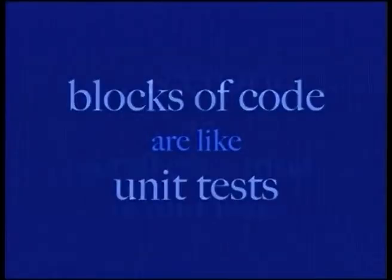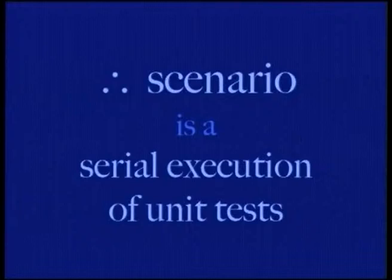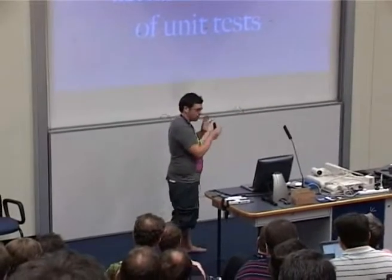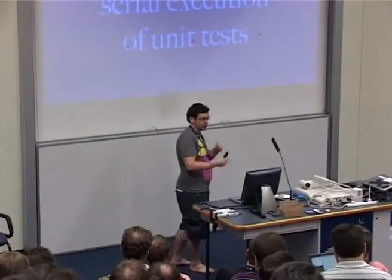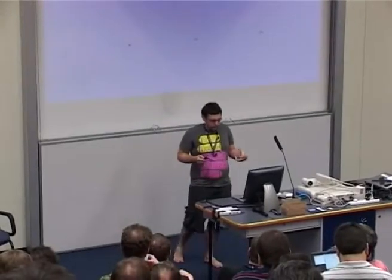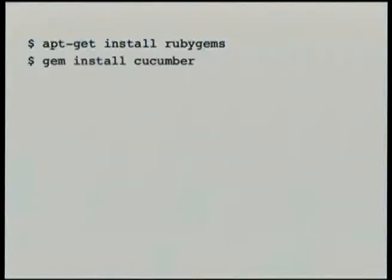The blocks of code are like unit tests. Therefore a scenario is a serial execution of those unit tests — that's essentially what an integration test is. You're interacting with different bits of the system at one point at a time and stringing the results together to check: if I do A, then B, then C, I see D. Installing Cucumber is pretty simple — it's written in Ruby and distributed as a Ruby gem.